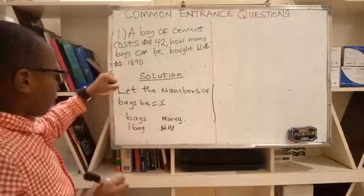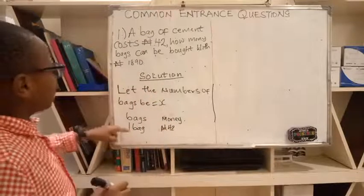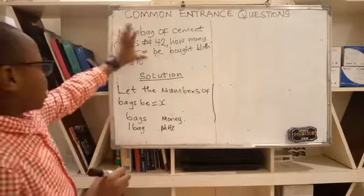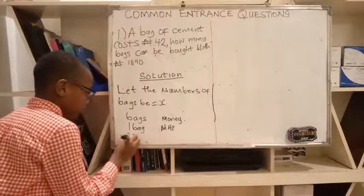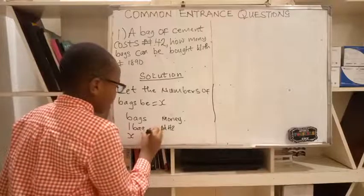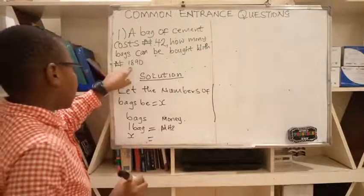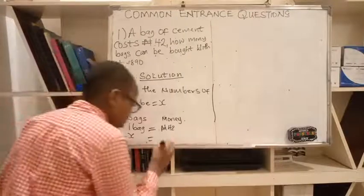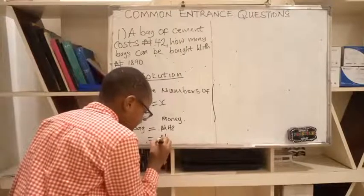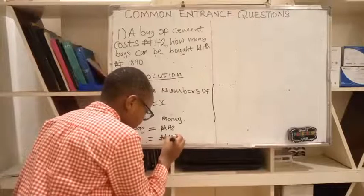Then we'll now come into the bags again. How many bags? We do not know. They cost 1890. So we're just going to write X and write 1890.